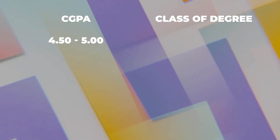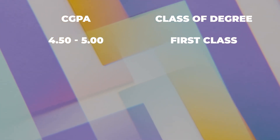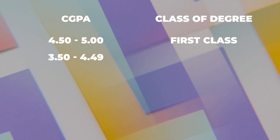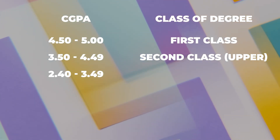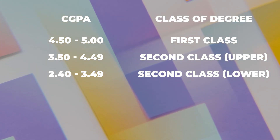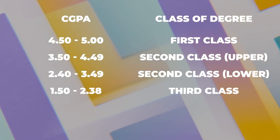The cumulative grade point average determines the class of degree on graduation. If your CGPA is between 4.50 and 5, you are on first class. Between 3.50 and 4.49, you are on second class upper. Between 2.40 and 3.49, you are on second class lower. Between 1.50 and 2.39, you are on third class.